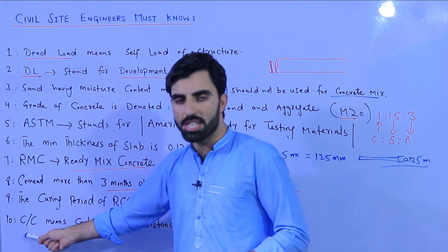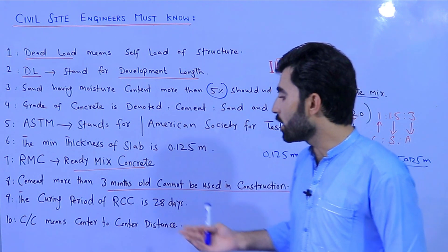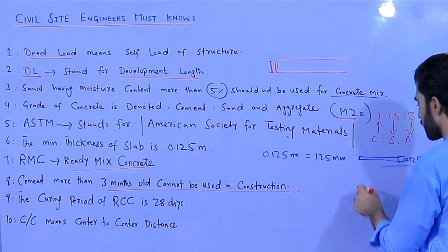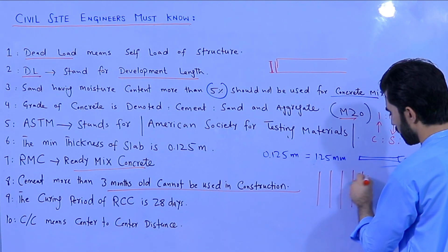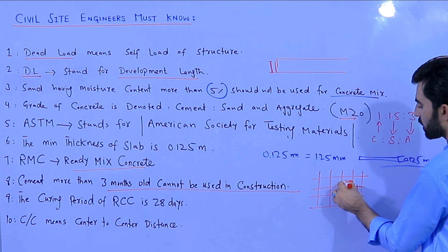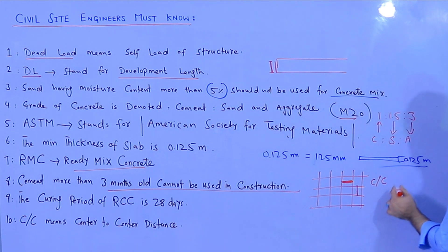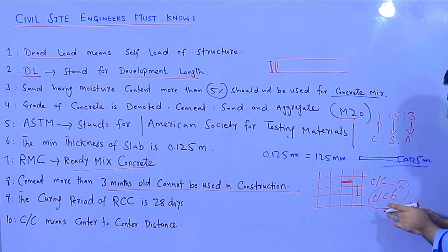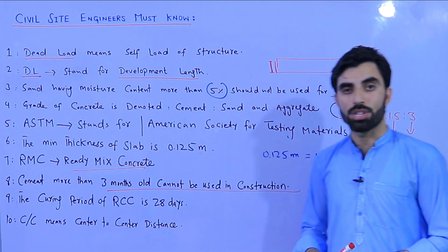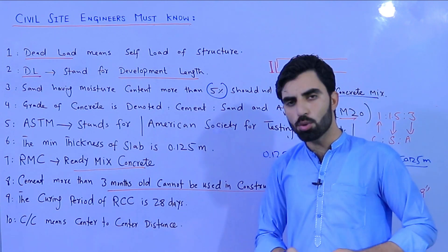The tenth point: C/C, which you can see in structural drawings especially in steel reinforcement details, stands for center-to-center distance. For example, if the drawing shows '6 inches C/C,' it means the center-to-center distance between two steel bars is 6 inches or 9 inches. This is an important notation civil site engineers must know.